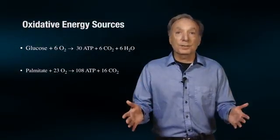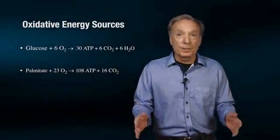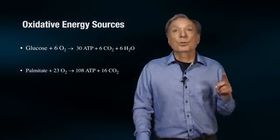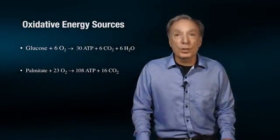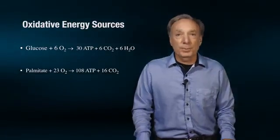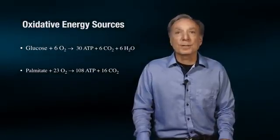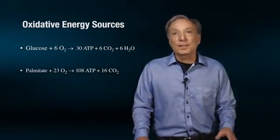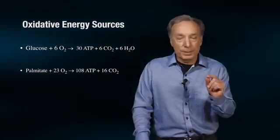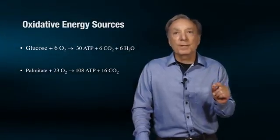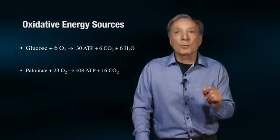The major aerobic sources for ATP production during exercise come from the oxidation of carbohydrates and fats. Notice that 1, oxygen is required, and 2, the oxidation of glucose yields 30 ATP as opposed to only 2 ATP if we break down glucose anaerobically. Thus, for the very same glucose molecule, we get 15 times more ATP via the aerobic versus the anaerobic pathway.